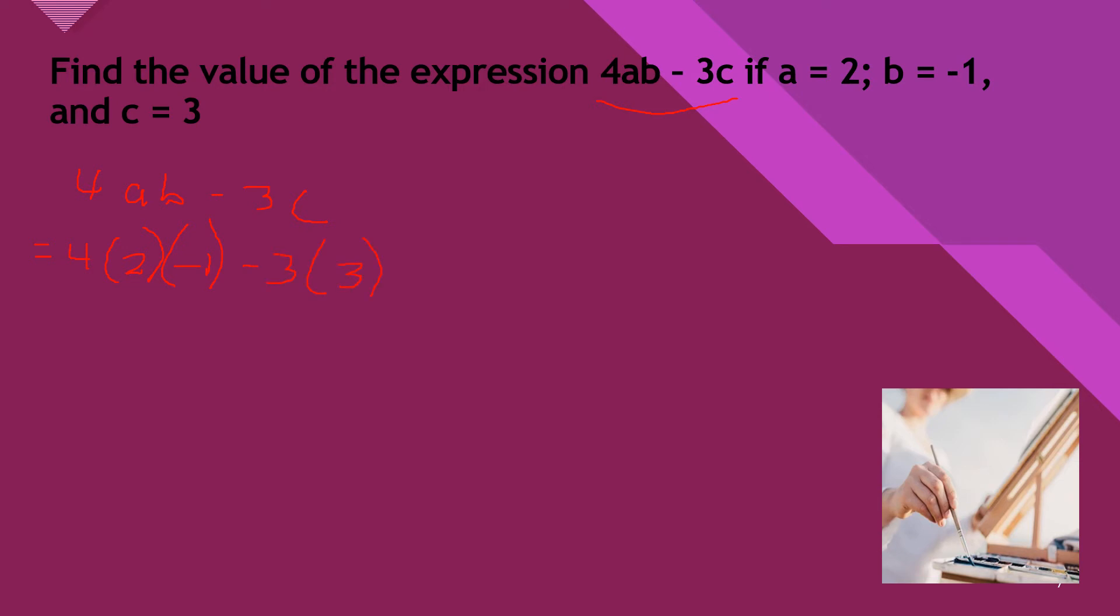So we have 4 × 2 is 8, 8 × -1, then -3 × 3 equals -9. So we have -8, because 8 × -1 is -8, minus 9. The answer is -17. Just combine if the signs are the same.